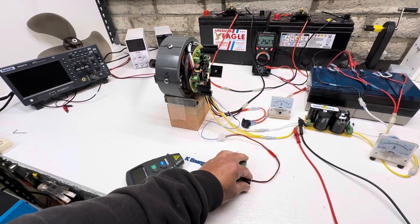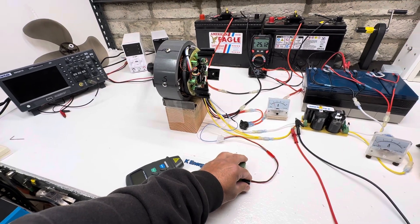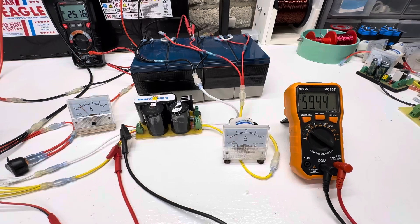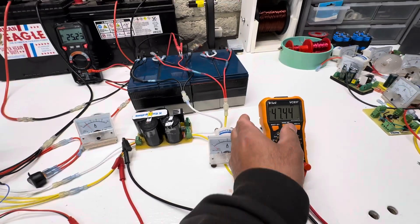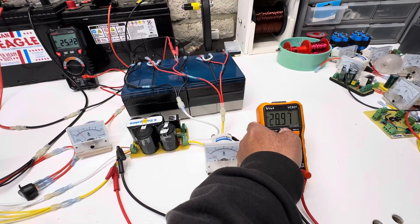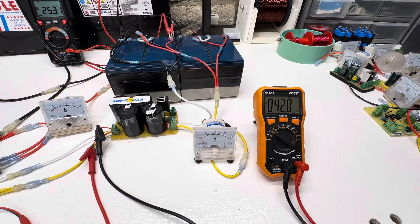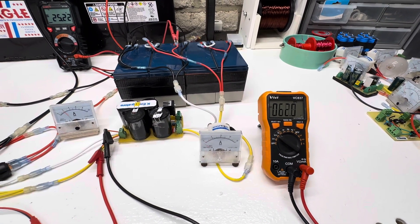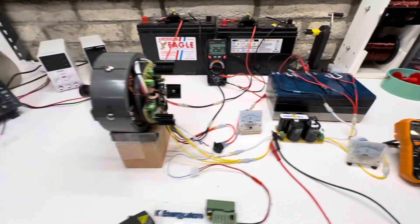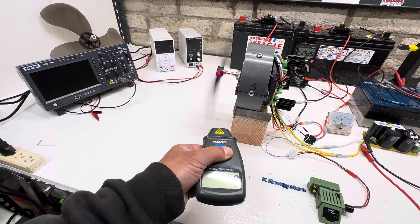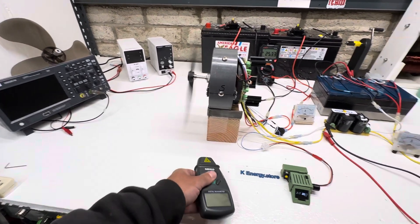As you can see, this is starting to go faster. It charges really quickly. At two amps we're at 2000 RPMs. Let's bring it up to three amps.